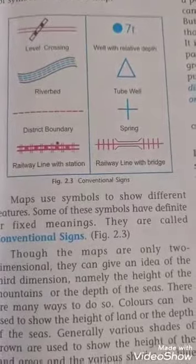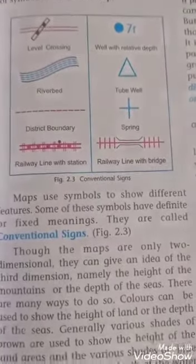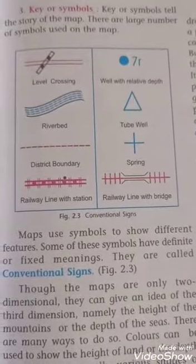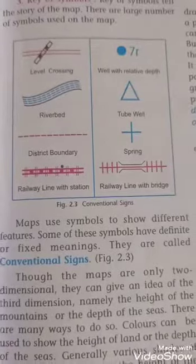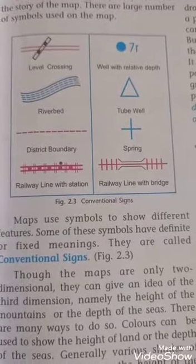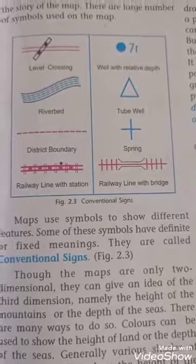For example, nearby our school a board is there where a student with bag is marked. It means school is ahead. These symbols help to indicate the various things with the help of the map.